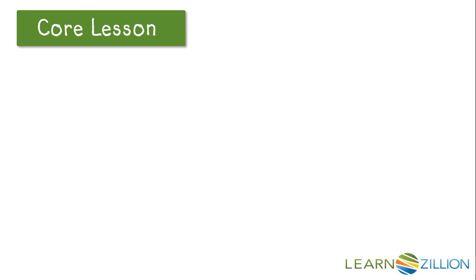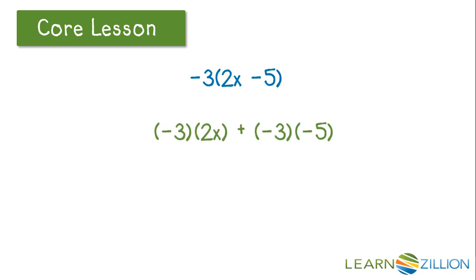Let's take a look at another example. Let's say that we want to distribute negative 3 through the quantity 2x minus 5. We know that this means we are multiplying negative 3 times 2x and negative 3 times negative 5. Negative 3 times 2x gives us negative 6x, and negative 3 times negative 5 gives us positive 15. So we end up with the expression negative 6x plus 15.